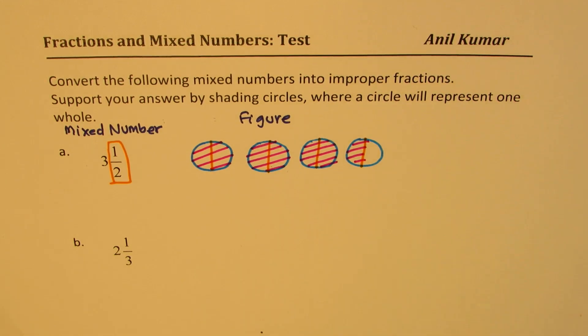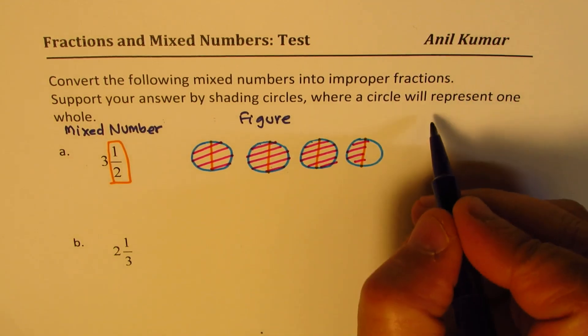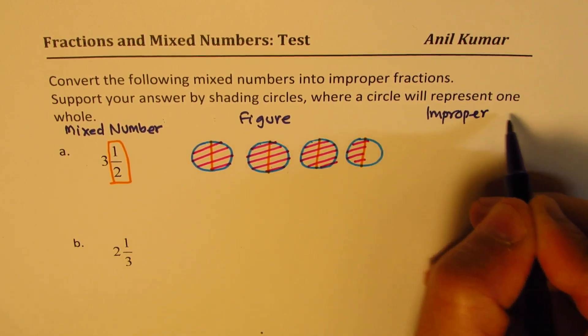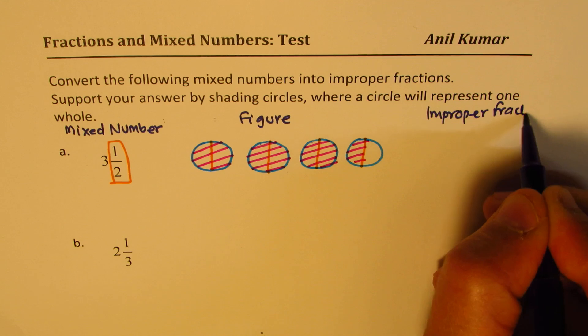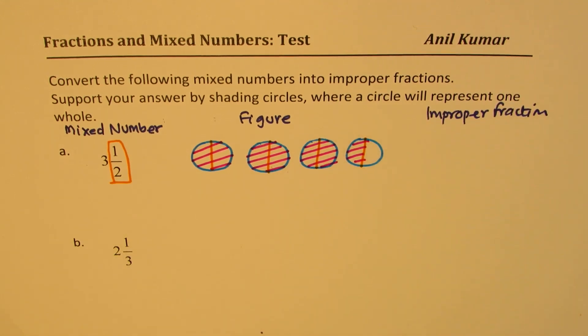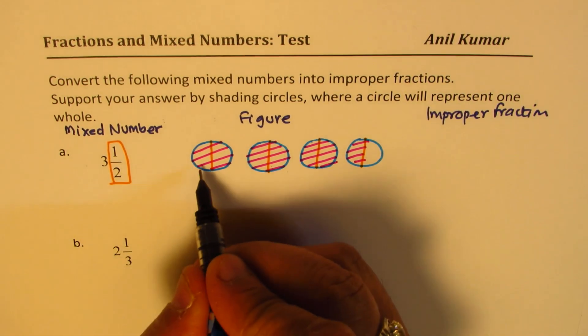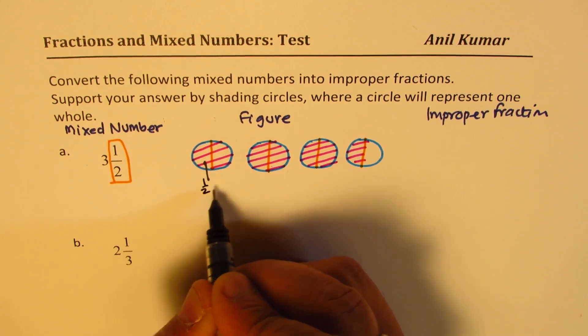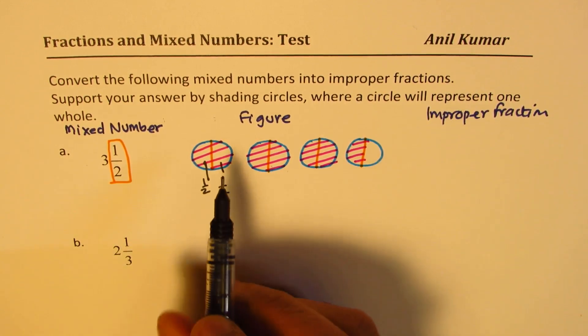Now, how do you write this as an improper fraction? From the figure it is absolutely clear. Let's count how many halves. Each is half. One half, this is half, this is also half. So we have one half, two halves, three halves, four halves,